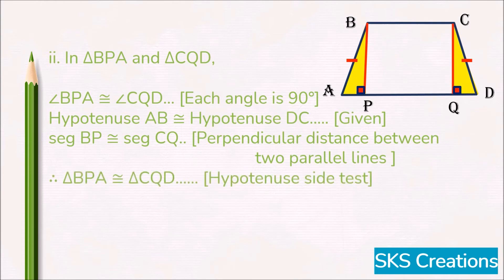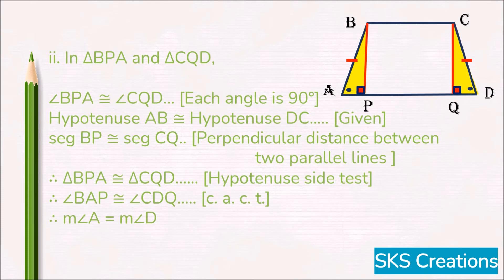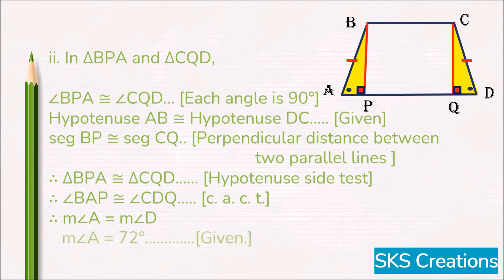Therefore, triangles BPA and CQD are congruent by the Hypotenuse-Side test. Since the two triangles are congruent, their remaining parts are also congruent. So angle A (angle BAP) is congruent to angle D (angle CDQ) as corresponding angles of congruent triangles. Since angle A equals angle D, and angle A is given as 72 degrees, therefore measure of angle D is also 72 degrees.